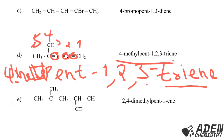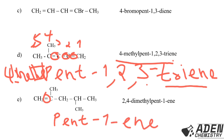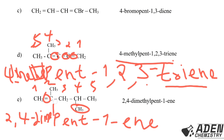For compound (e): count the carbon atoms — one, two, three, four, five — so the prefix is 'pent-'. There is one double bond at carbon 1, so we write 'pent-1-ene'. There are two methyl attachments: one at carbon 2 and one at carbon 4. With two identical substituents we use 'dimethyl'. So the IUPAC name is 2,4-dimethylpent-1-ene.